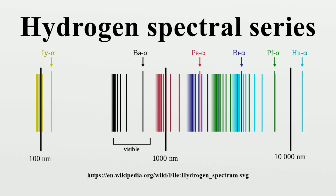The spectral lines are grouped into series according to n. Lines are named sequentially starting from the longest wavelength, lowest frequency of the series, using Greek letters within each series. For example, the 2→1 line is called Lyman Alpha, while the 7→3 line is called Paschen Delta.